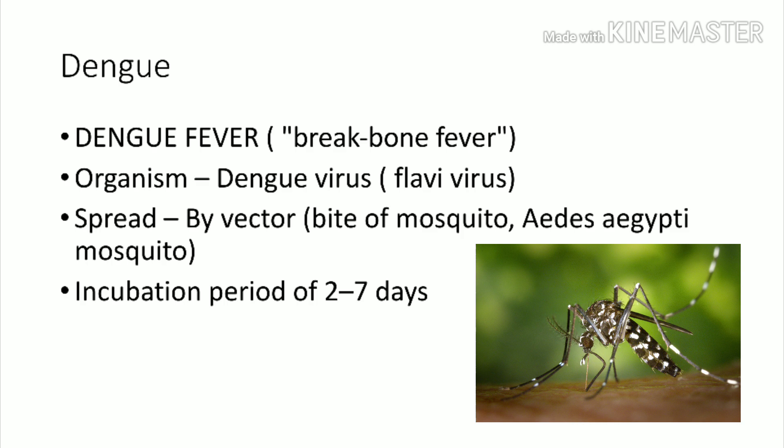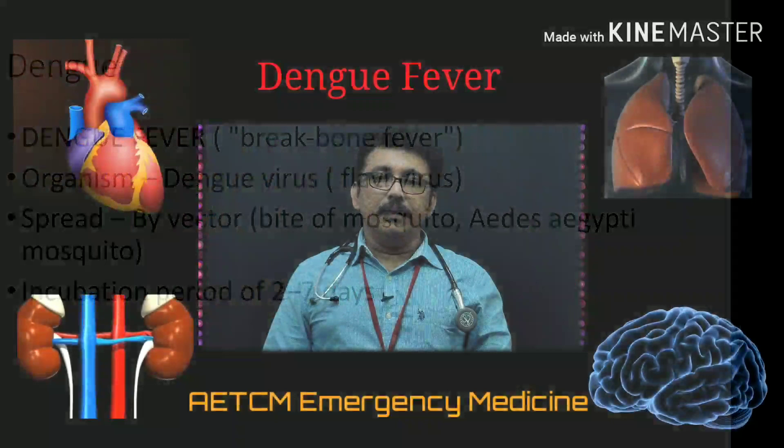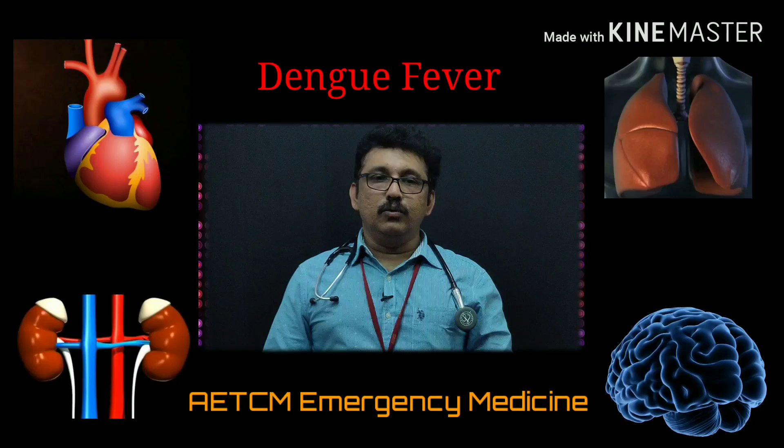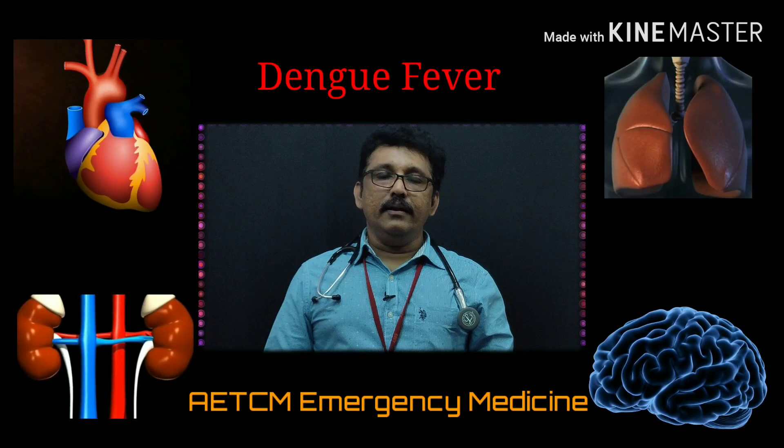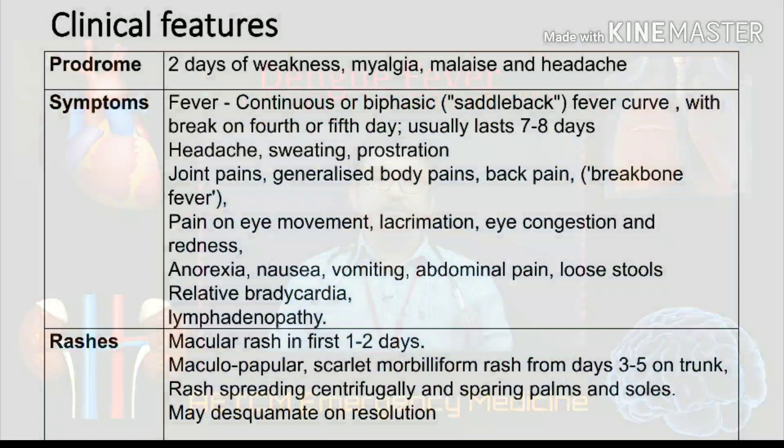The incubation period of dengue fever is 2 to 7 days. After a mosquito bite, it takes a minimum of 2 to 7 days for the onset of fever. Now we'll see the clinical features of dengue fever. Every viral fever, including dengue fever, will have a prodromal phase.